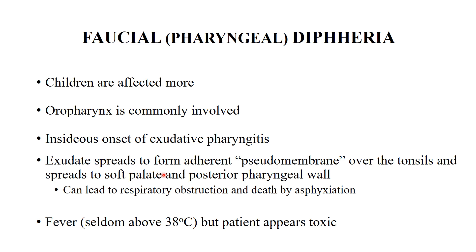The membrane can spread to the soft palate, then to the posterior pharyngeal wall, extend upwards to the nasopharynx, and lower down to involve the larynx — leading to respiratory obstruction and even death by asphyxiation. Even if patients survive the obstruction, they may die of heart problems and neuropathies. Fever is present but seldom rises above 38°C. However, the general appearance of the patient is very toxic compared to patients with acute membranous or follicular tonsillitis.